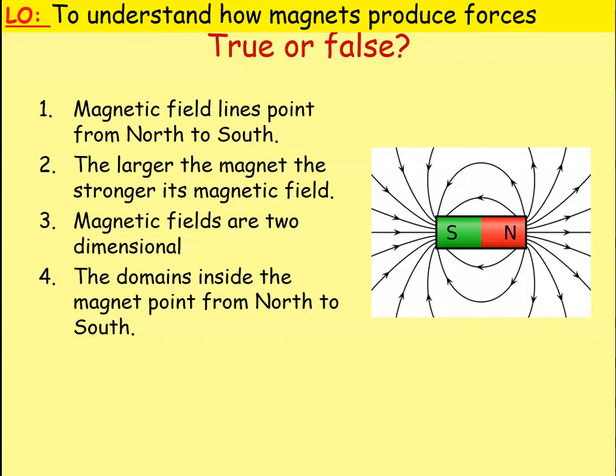Question one: magnetic field lines point from north to south — that is true, they always point from the north to the south. Question two: the larger the magnet, the stronger its magnetic field — that's false. The size of the magnet doesn't matter; it's about the strength of the magnetic field, the number of domains pointing in the same direction. Really big magnets could be really weak, really small magnets could be very strong.